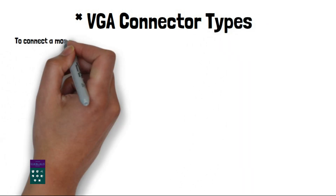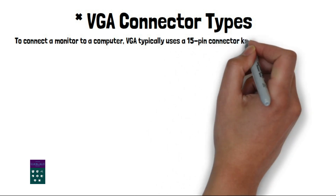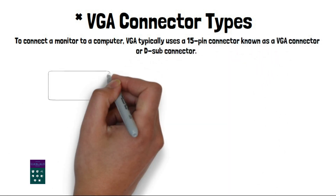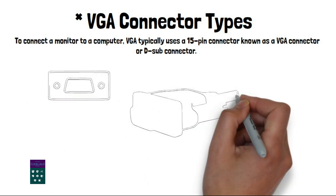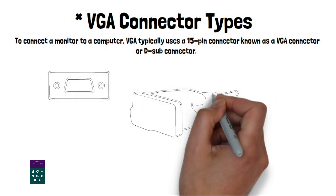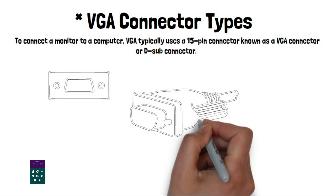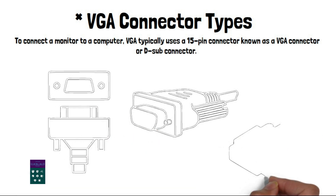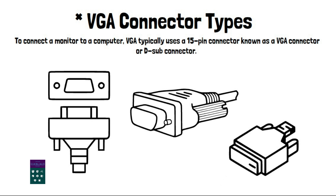To connect a monitor to a computer, VGA typically uses a 15-pin connector known as a VGA connector or D-sub connector. This connector carries the analog video signals, as well as additional pins for synchronization and other control signals. While the VGA connector is gradually being replaced by newer digital interfaces like HDMI and DisplayPort, it is still widely used, especially in older systems and some niche applications.